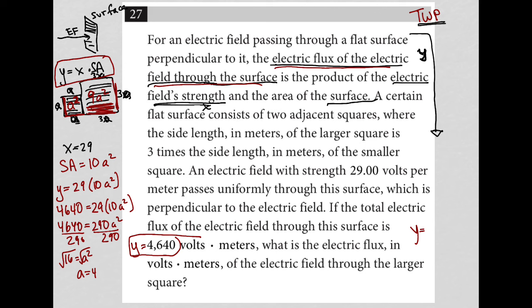I know that Y is always equal to X, which is the electric field strength, which we already were told is 29, times the surface area. But the surface area in this case is just through the larger square. So the surface area of the larger square is 9A squared.